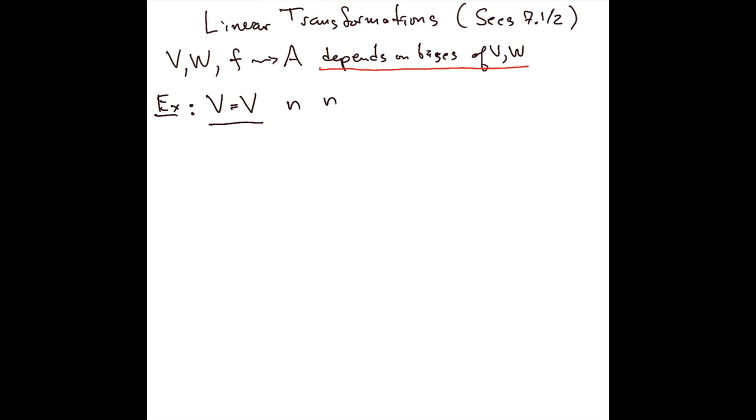Suppose I'm interested in the matrix of a linear transformation f from V to V. Well, I'm going to use the same basis for both copies of V, of course, so I just have to choose a basis v_1 through v_n, and once I've done that I get a matrix A for this linear transformation.